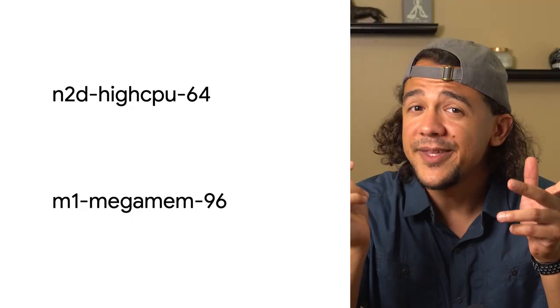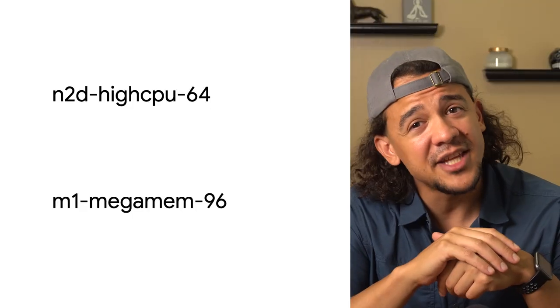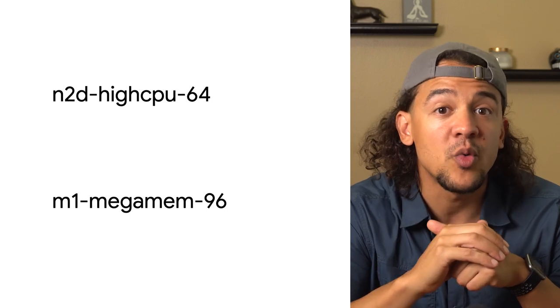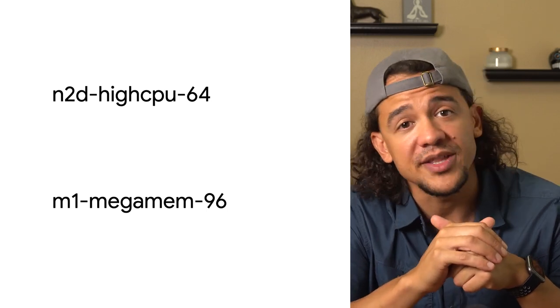That's how they're organized, but that won't help you choose between a general-purpose N2D High CPU 64 and a memory-optimized M1 MegaMem 96, for instance. These names don't exactly roll off the tongue, but understanding the naming convention is a valuable step towards making the right choice.